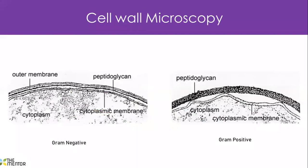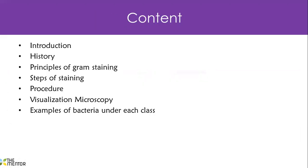Microscopically, if we look at it under a microscope, in a Gram negative there is an outer membrane, then the thin peptidoglycan layer, and obviously the cytoplasmic membrane or normal cell membrane. For a Gram positive, you can see how thick the peptidoglycan layer is, and there is no outer membrane. That is how it looks microscopically, so you don't think we're just theoretically talking about things that are not there.